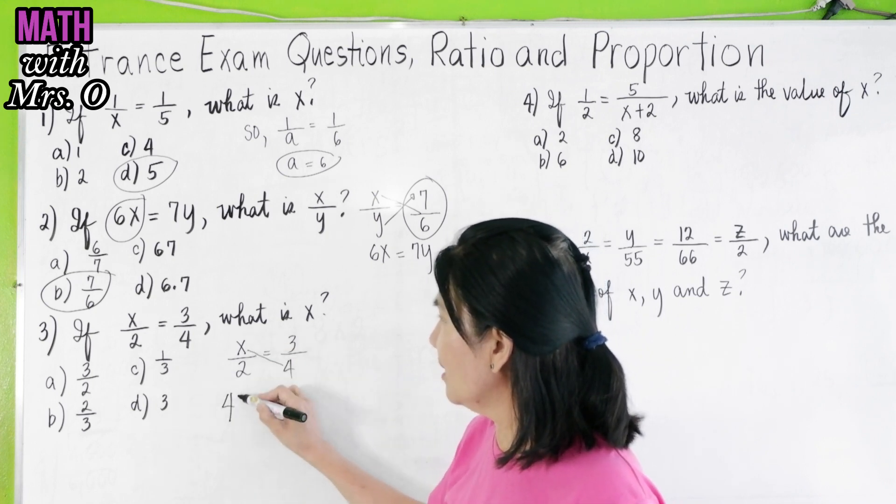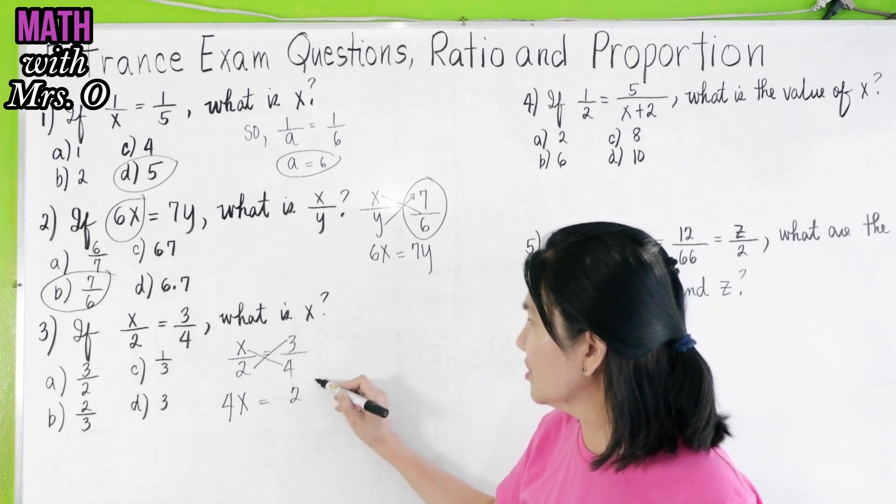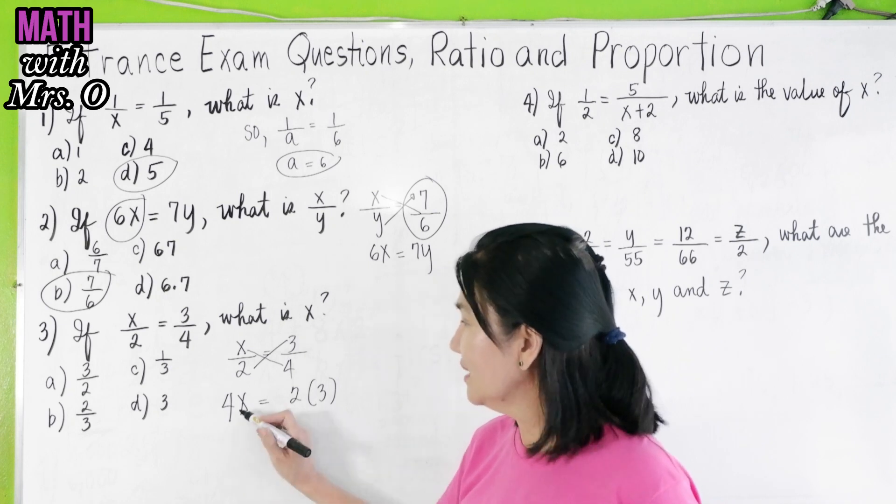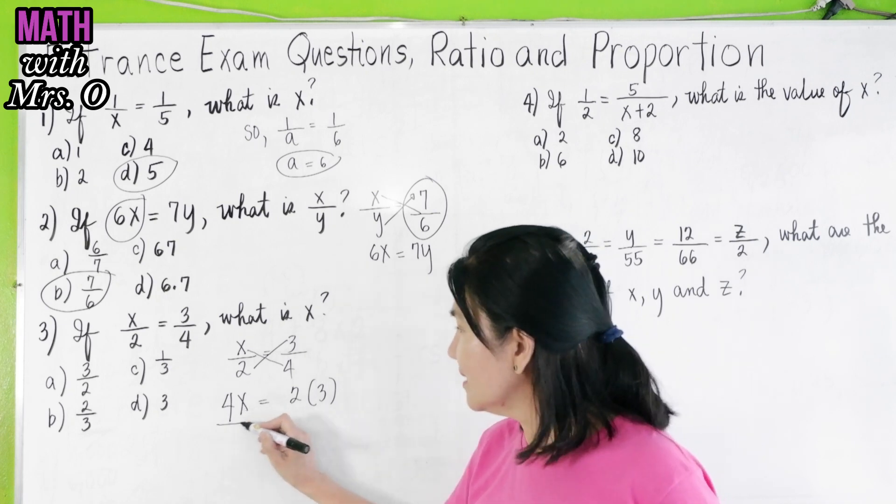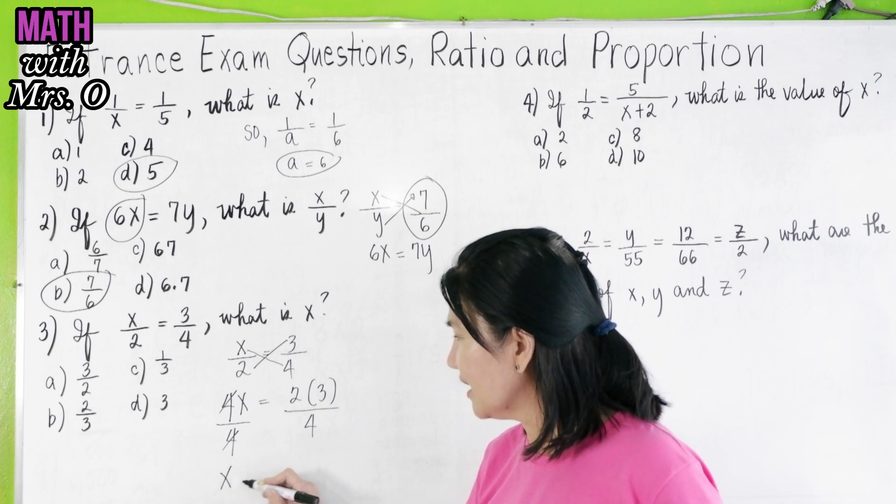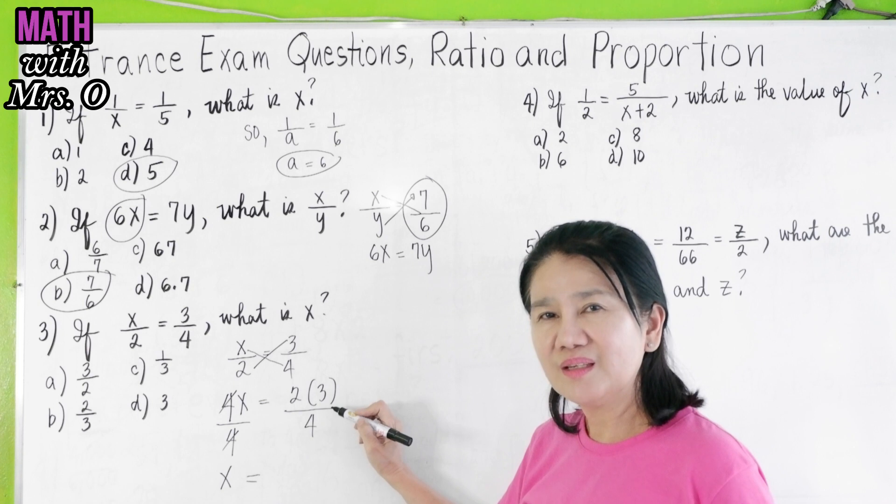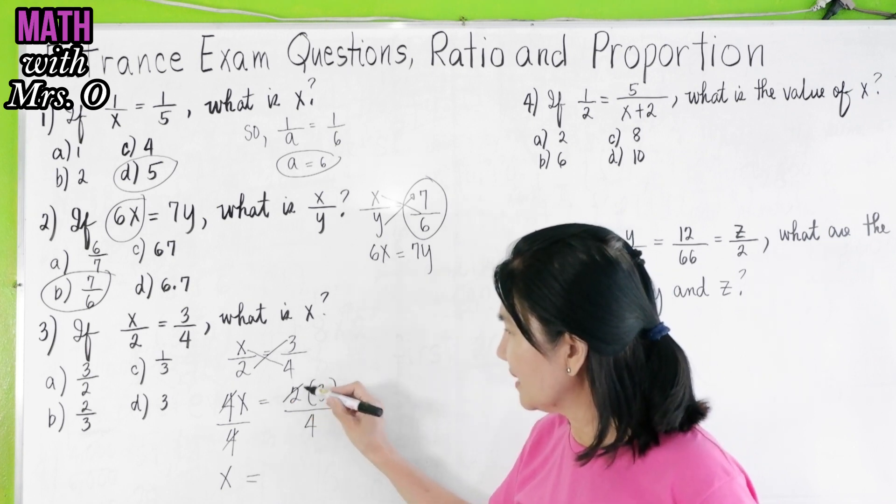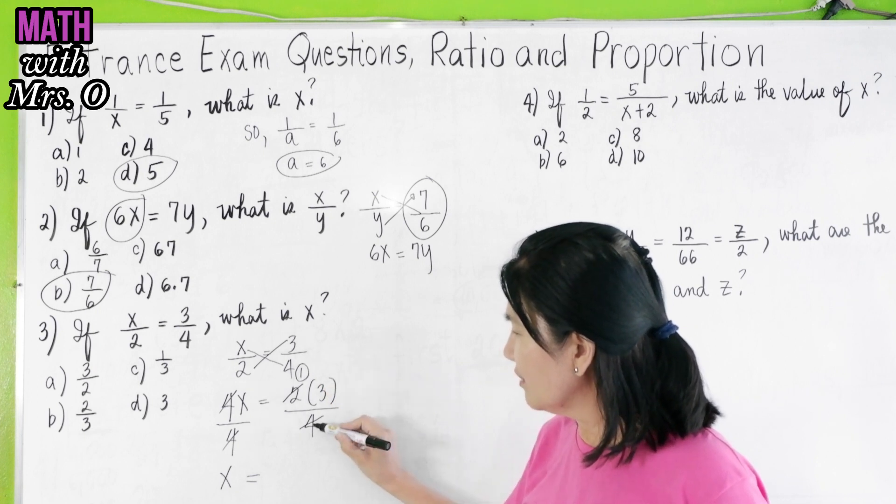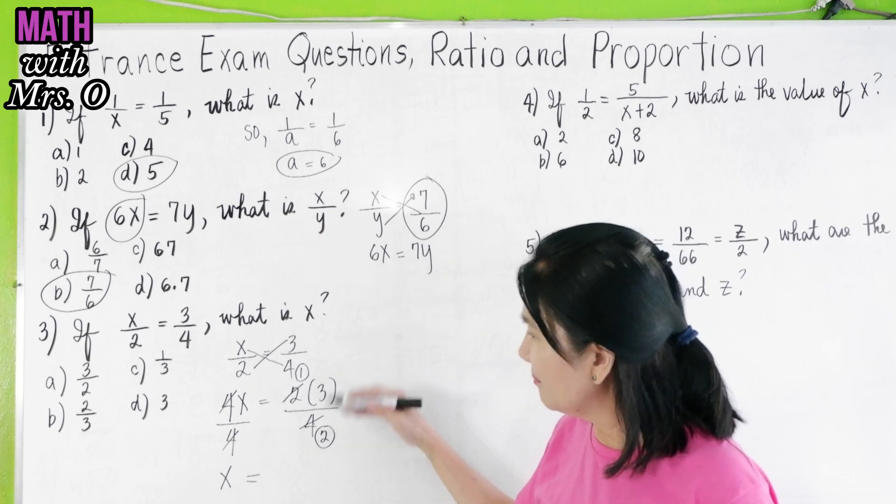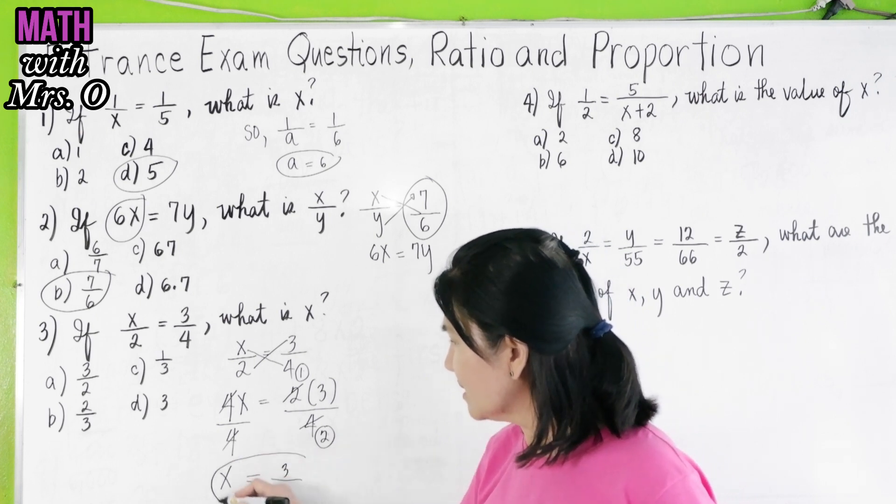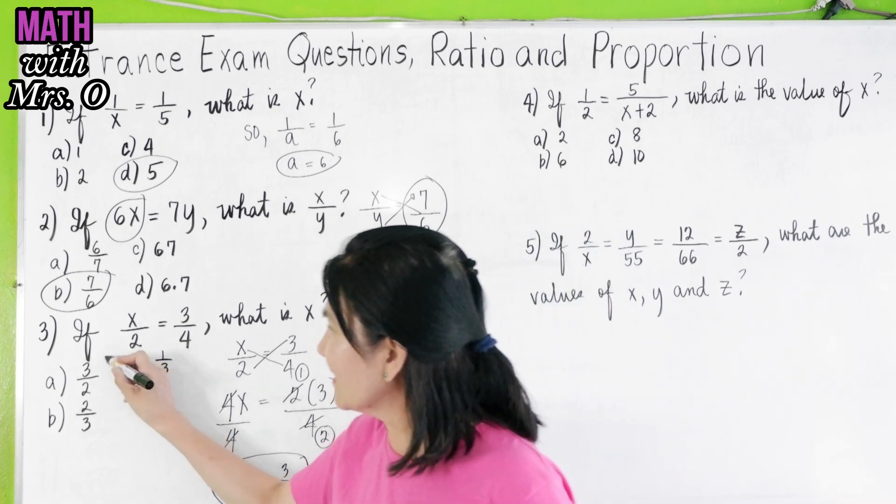So, cross this. You have 4x equals cross multiply 2 times 3. Take note that I did not multiply this yet, because I'm going to use cancellation later. Then, to isolate x, divide both sides by 4. So, you can now cancel 4 and 4 here. You're left with x equals. Take a look at the numbers here. What can you simplify? 2 and 4. They are both divisible by 2. 2 divided by 2 is 1. 4 divided by 2 is 2. Then, multiply all the numbers left in the numerator. 1 times 3 is 3 over 2. So, that makes our answer 3 halves, and this is letter a.